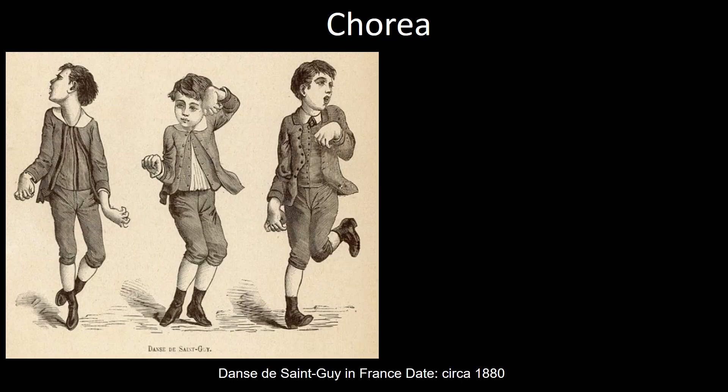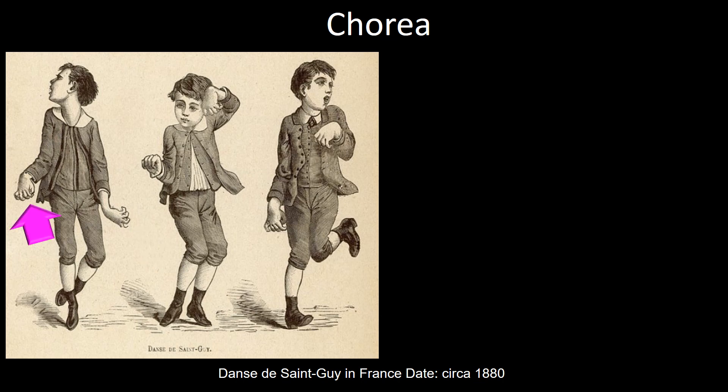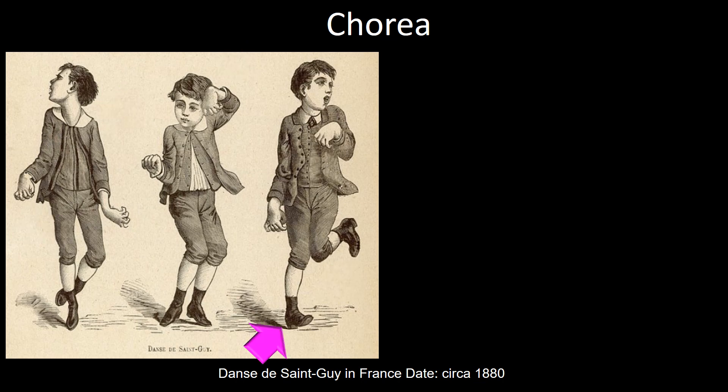Chorea is defined as an involuntary spasmodic movement, especially of the limbs and facial musculature. This engraving from 1880 depicts these movements, which involve the left hand, right hand, neck, wrist, leg, foot, and face.